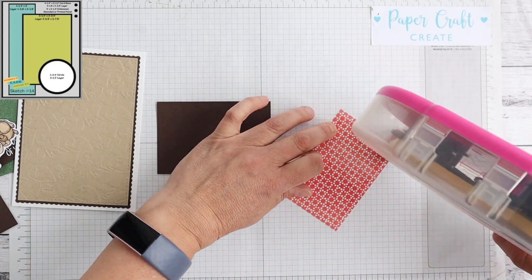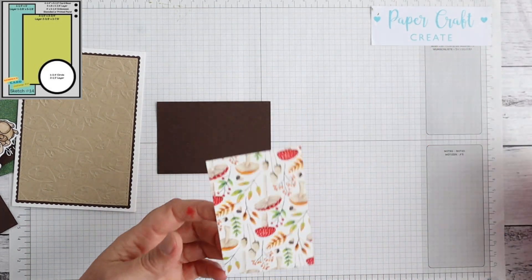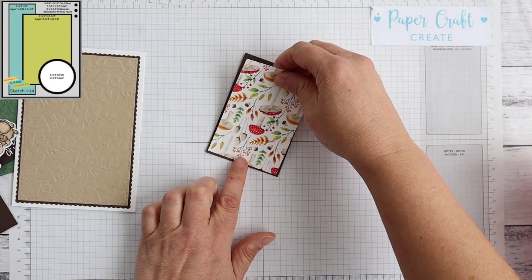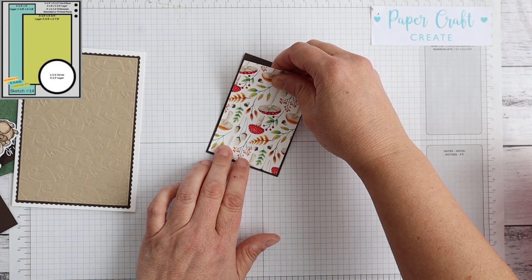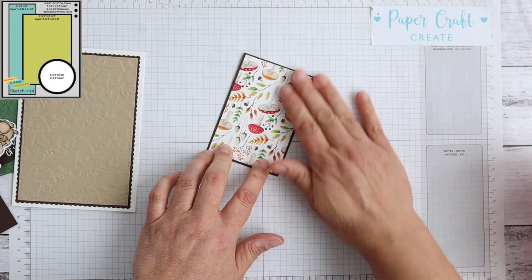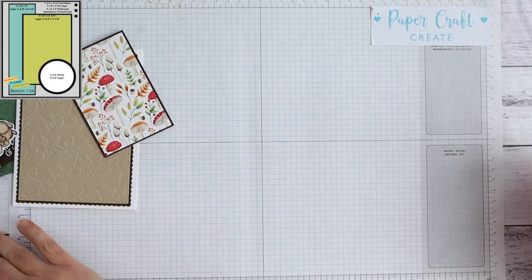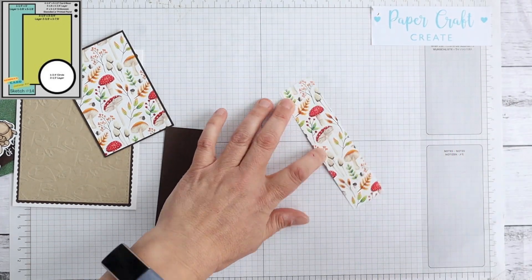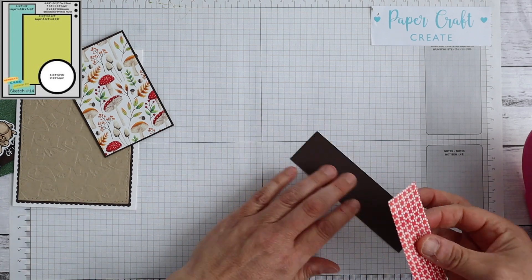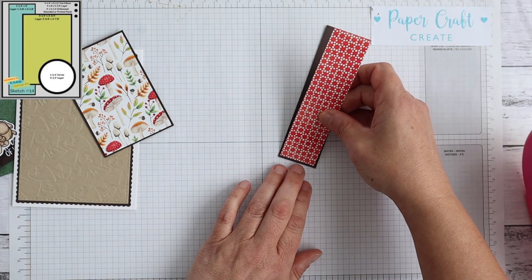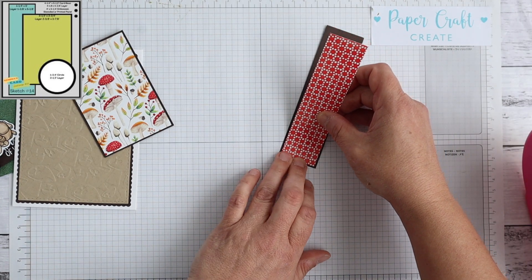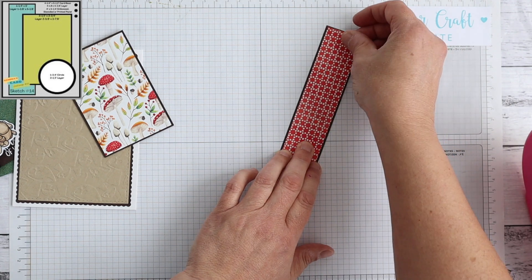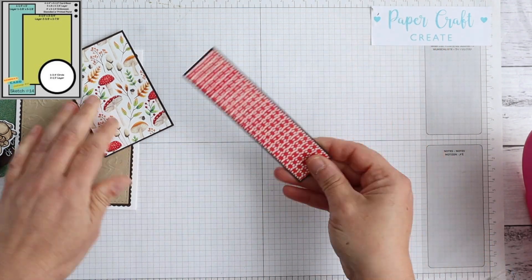Now what I have done is I have in fact changed the size of my card and I am using an Australian size card base. So for all the Aussies out there watching you too can definitely adapt this to the different paper size. So it is a half A5 which is roughly I think about 14.9 high by 21.